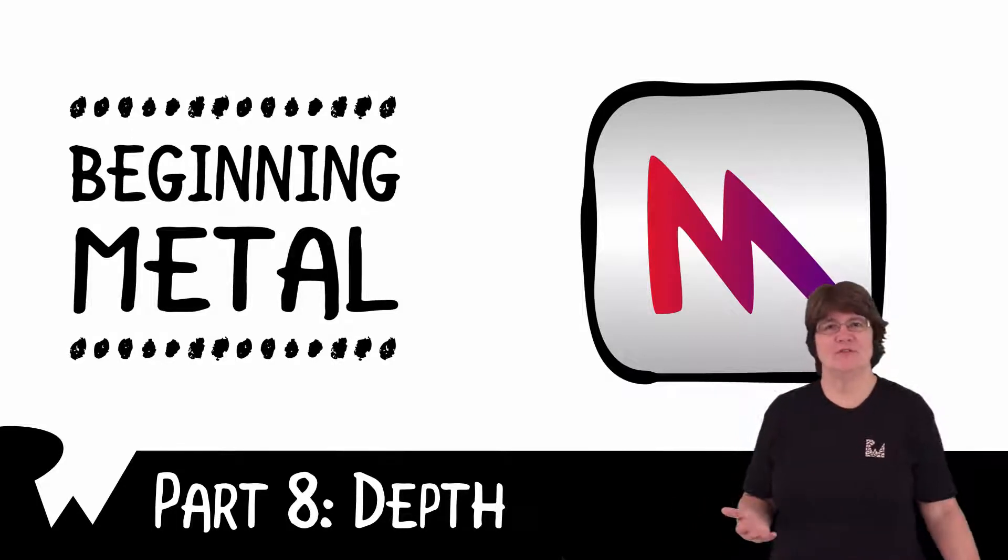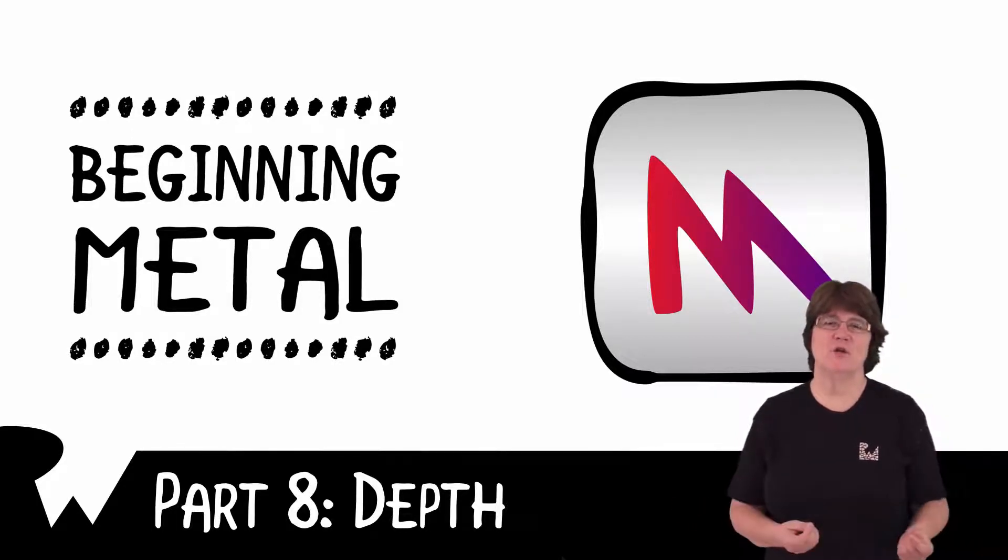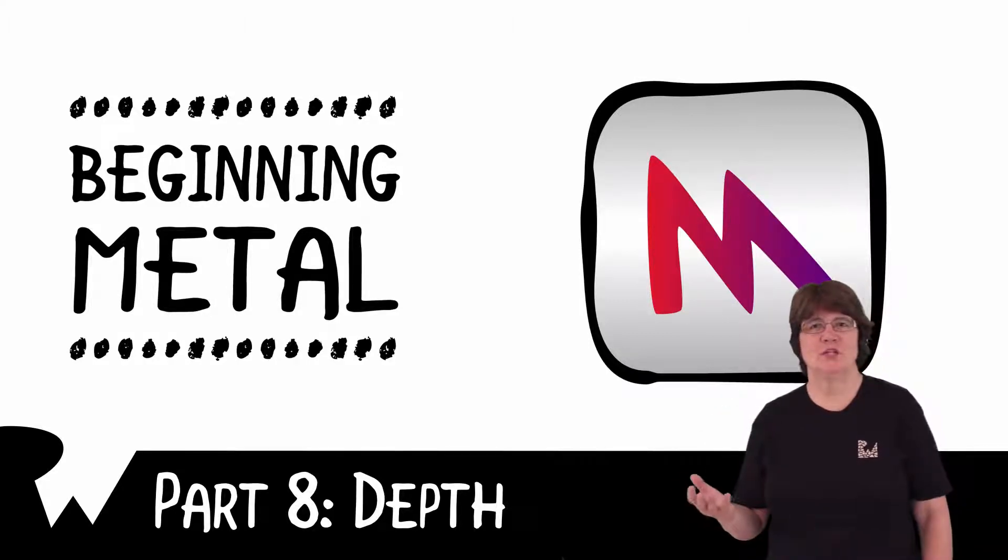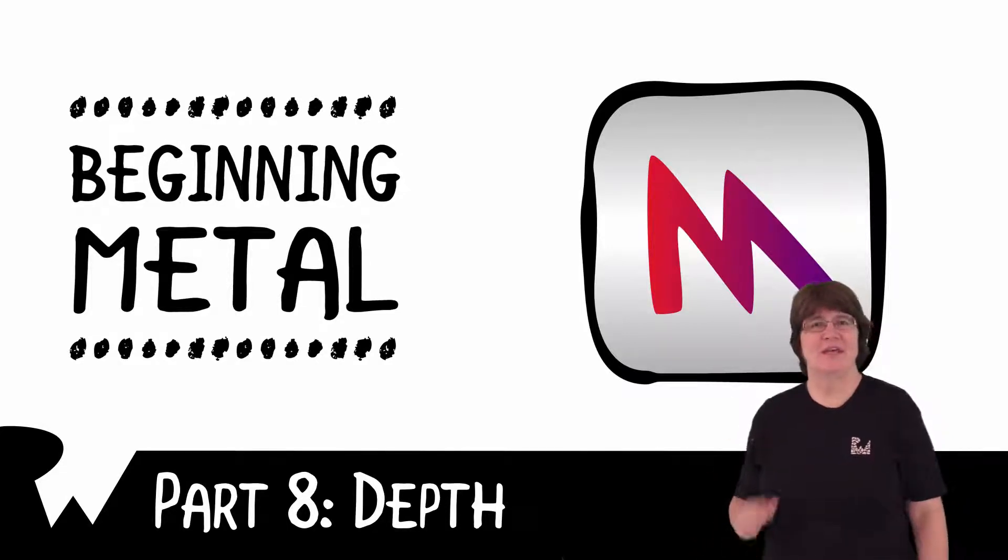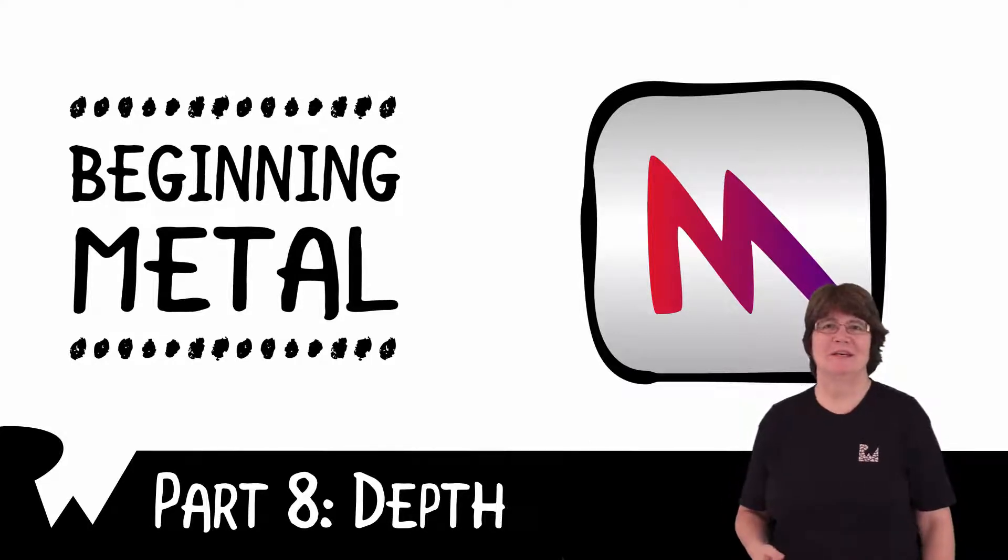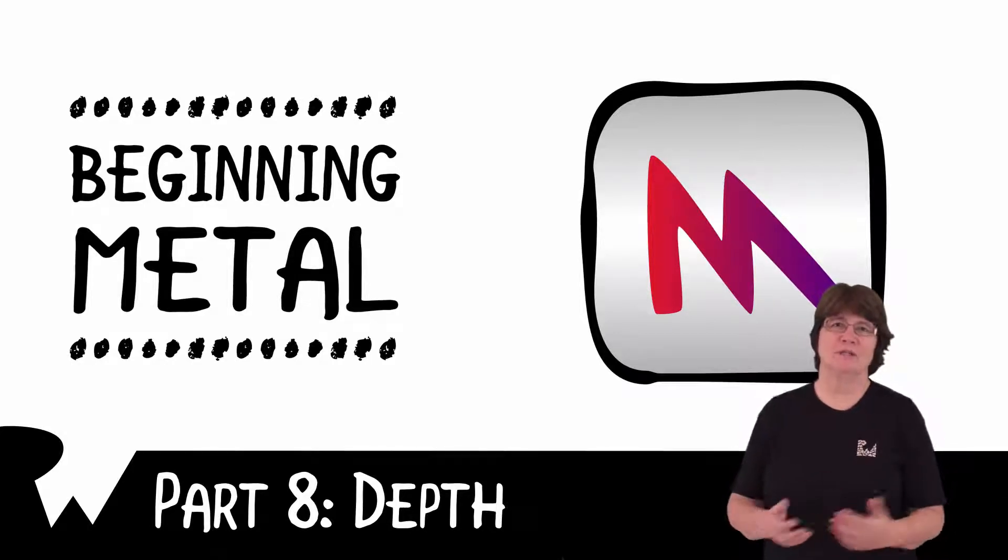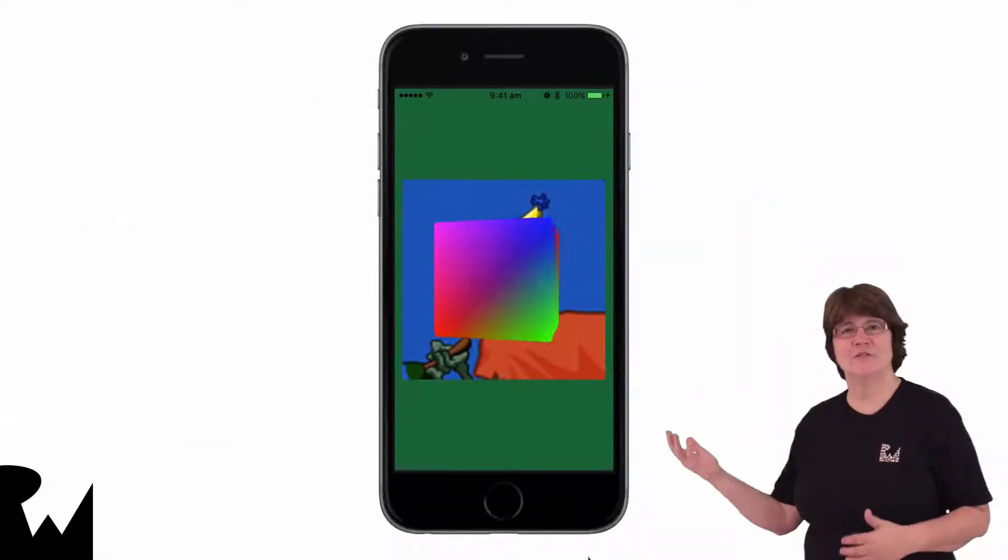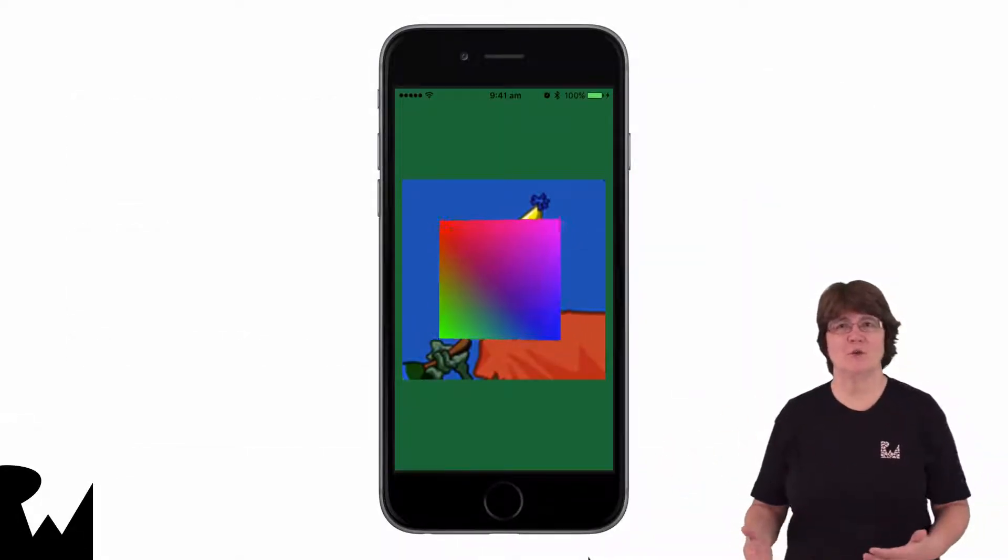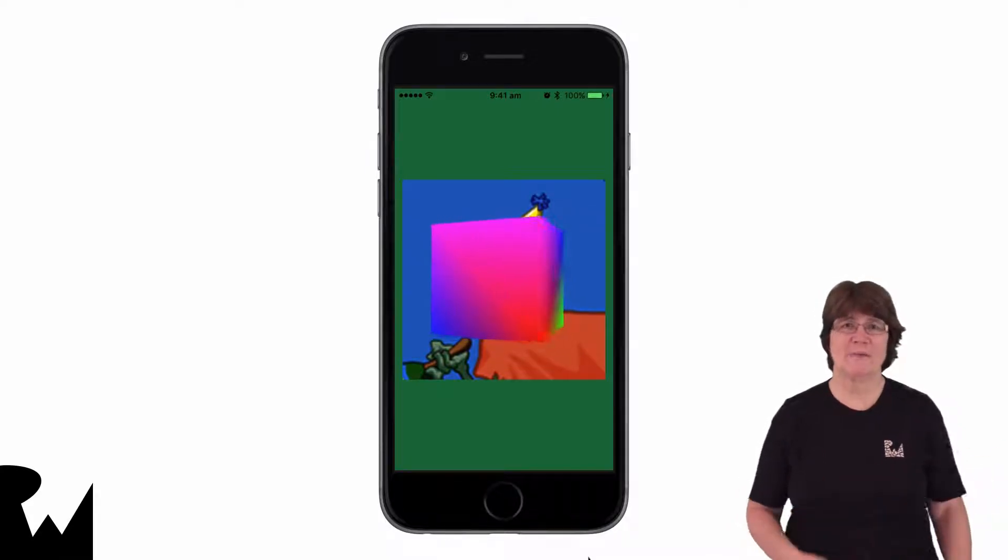In the previous video we created an illusion of depth and perspective using matrices. We used a two-dimensional model rotating in three-dimensional space. In this tutorial we're going to create a three-dimensional cube and see how to render one model in front of another in metal. At the end of this video we'll have a scene with a rotating cube with the zombie picture further back in the scene behind the cube.